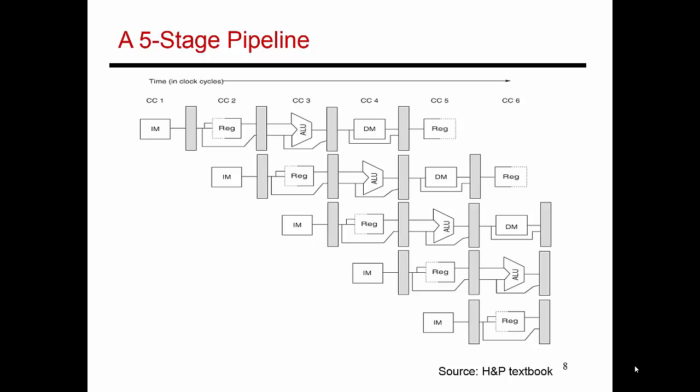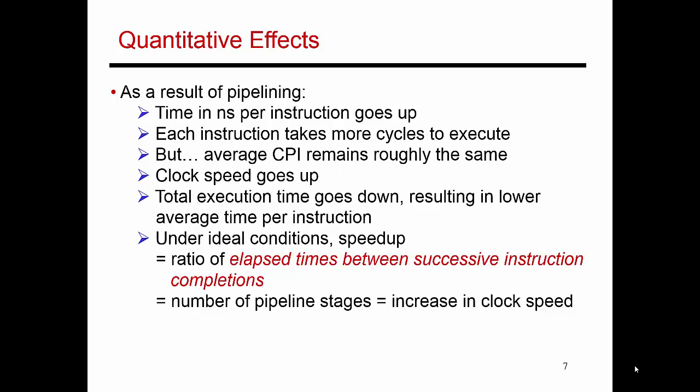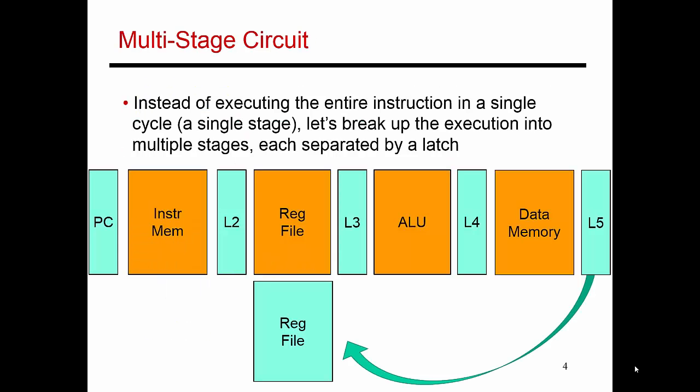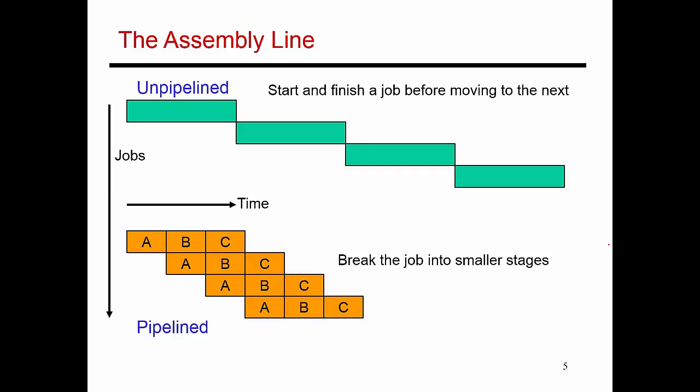Now that I've explained what pipelining is, let's build a five-stage pipeline for our processor. We've already seen how I took all of the circuits involved in executing one instruction and broke them up into five stages, with a latch separating every pair of stages. I'm going to take this five-stage circuit and pipeline it, so you can have a new instruction rolling in every new cycle.